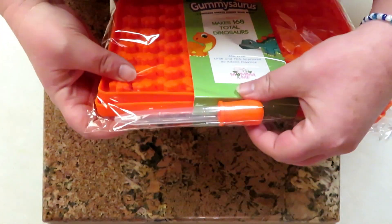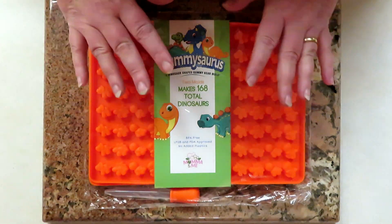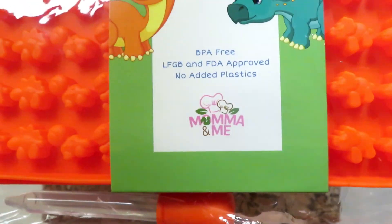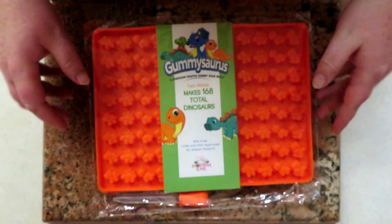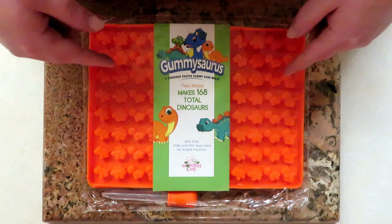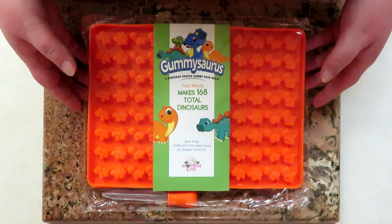You get a little dropper along with it and the video is sponsored by Mama and Me, and you can find them on Amazon. What we're going to do is we're going to use this mold actually for soap and make a really fun bar of soap.